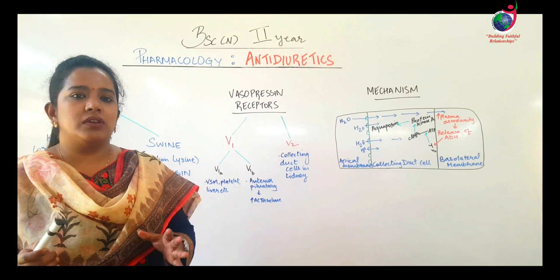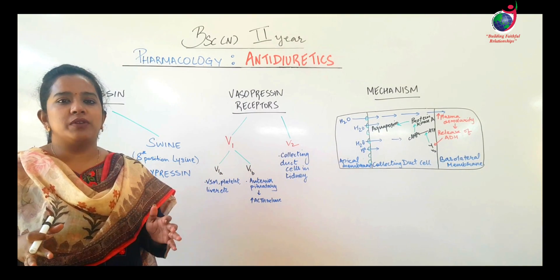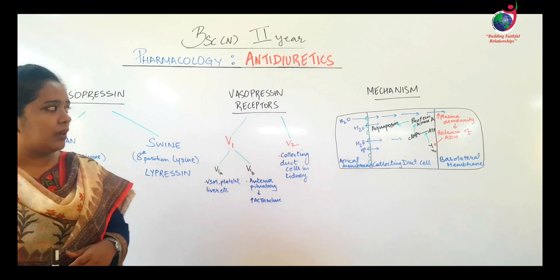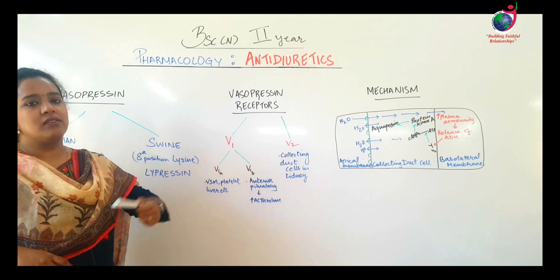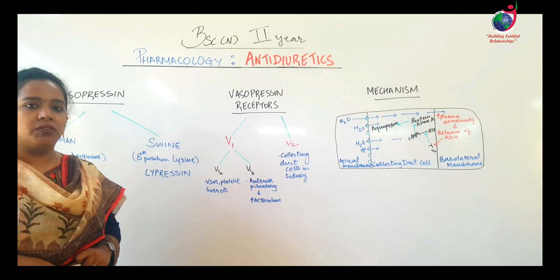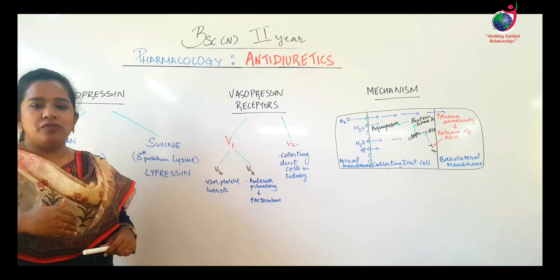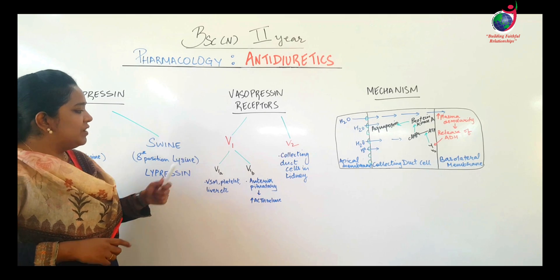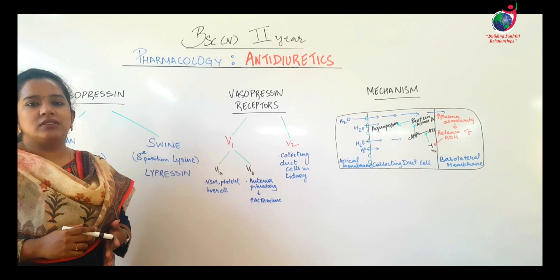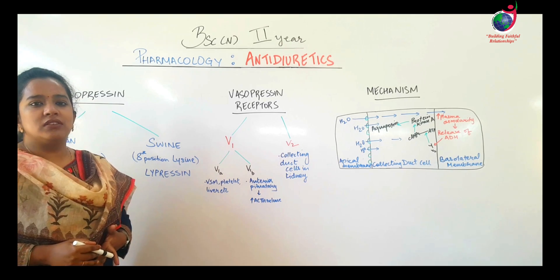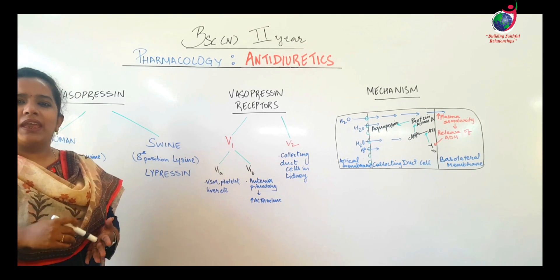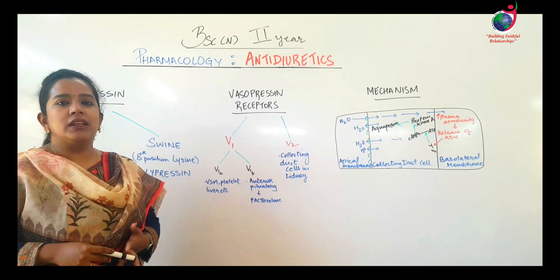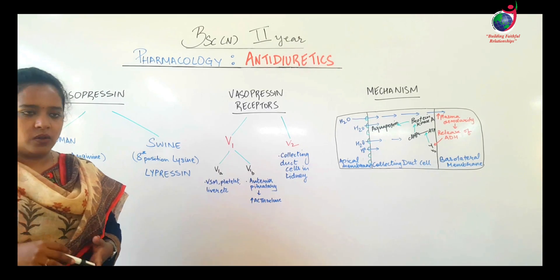When antidiuretic hormone or vasopressin is released in our body, it can bind to two main classifications of receptors: V1 and V2. V1 receptors are further divided into V1A and V1B. V1A receptors are present in vascular and other smooth muscles, platelets, and liver, and their primary function is to cause vasoconstriction.